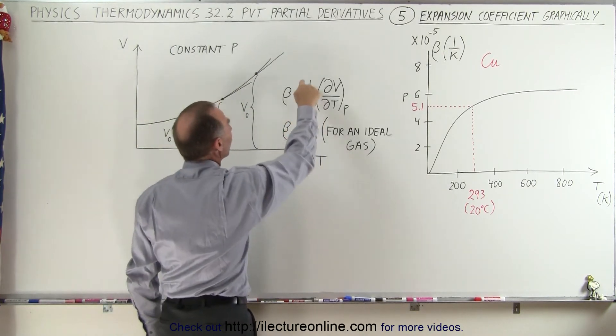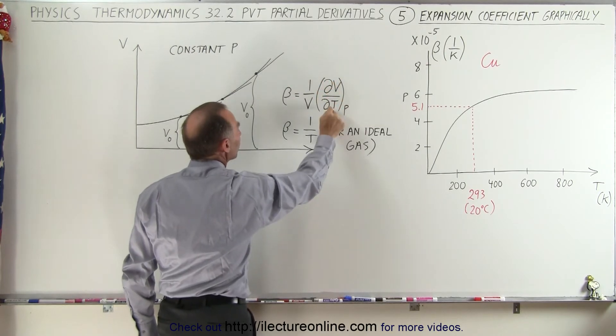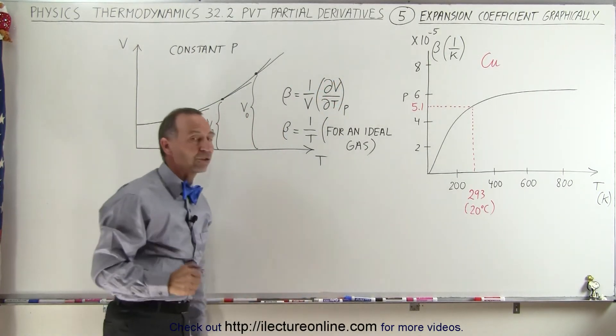But then also 1 over the volume is then multiplied by the change in the volume with respect to the temperature, keeping the pressure constant.